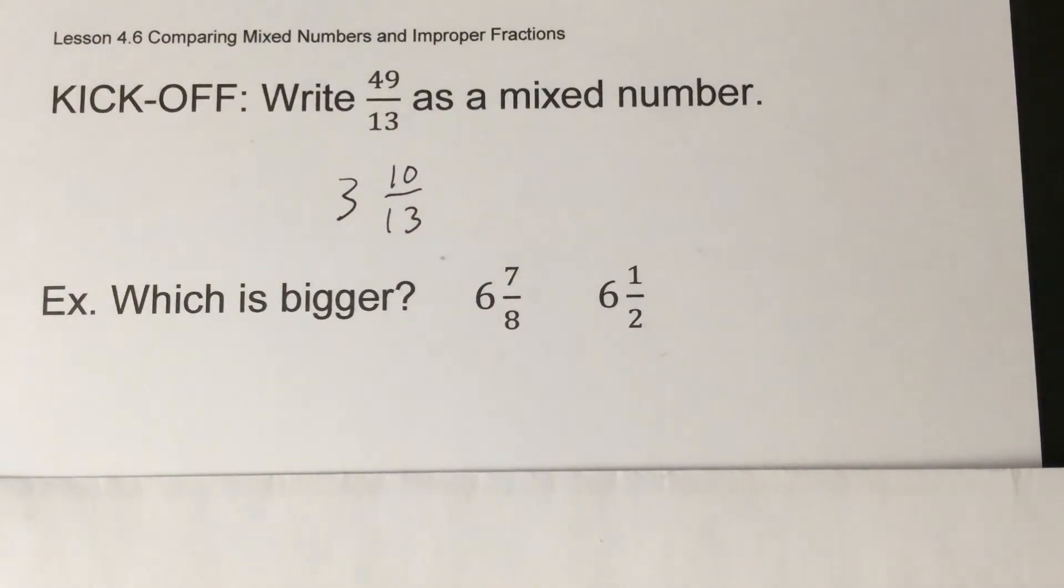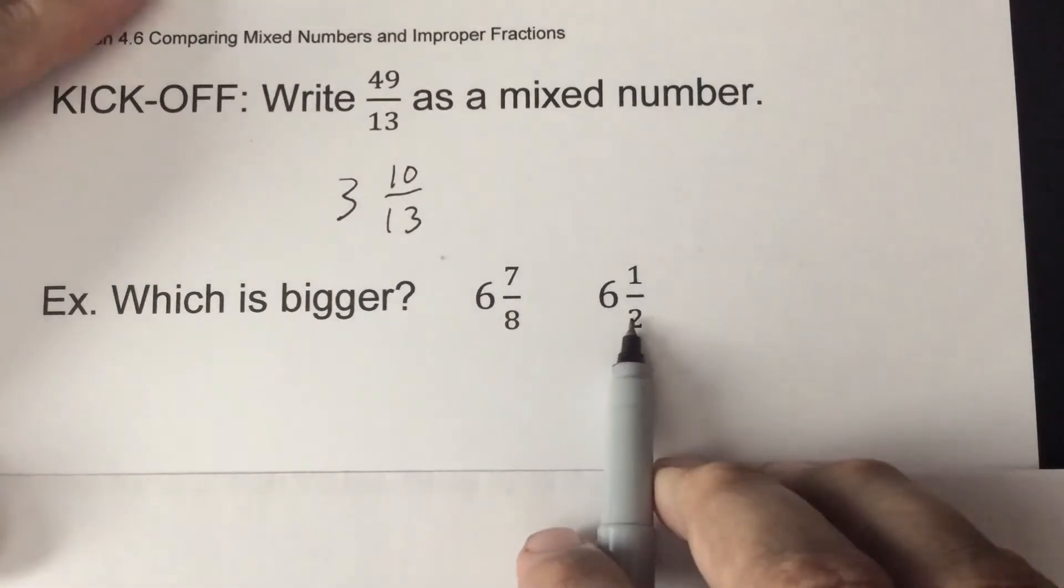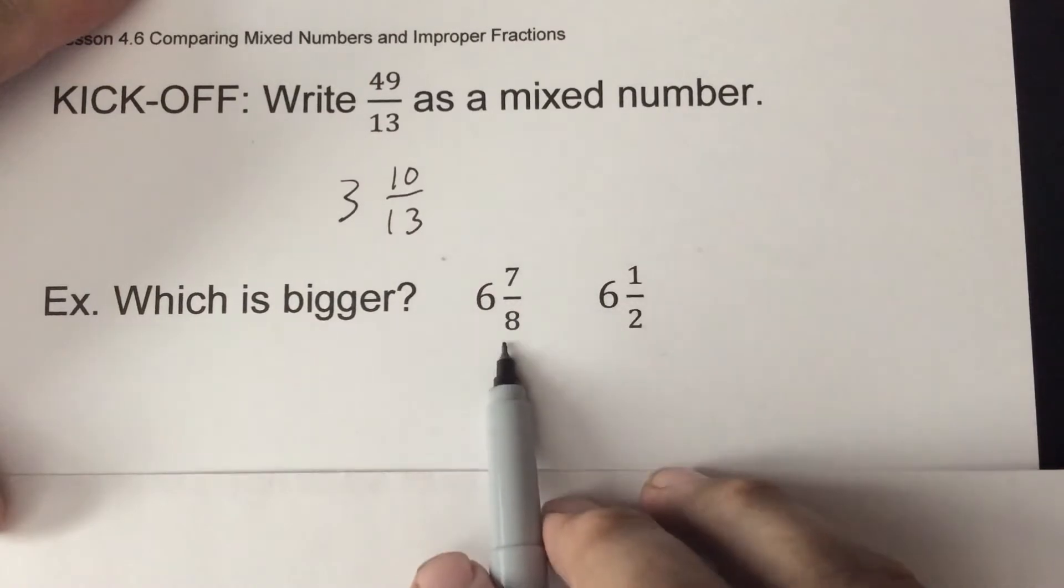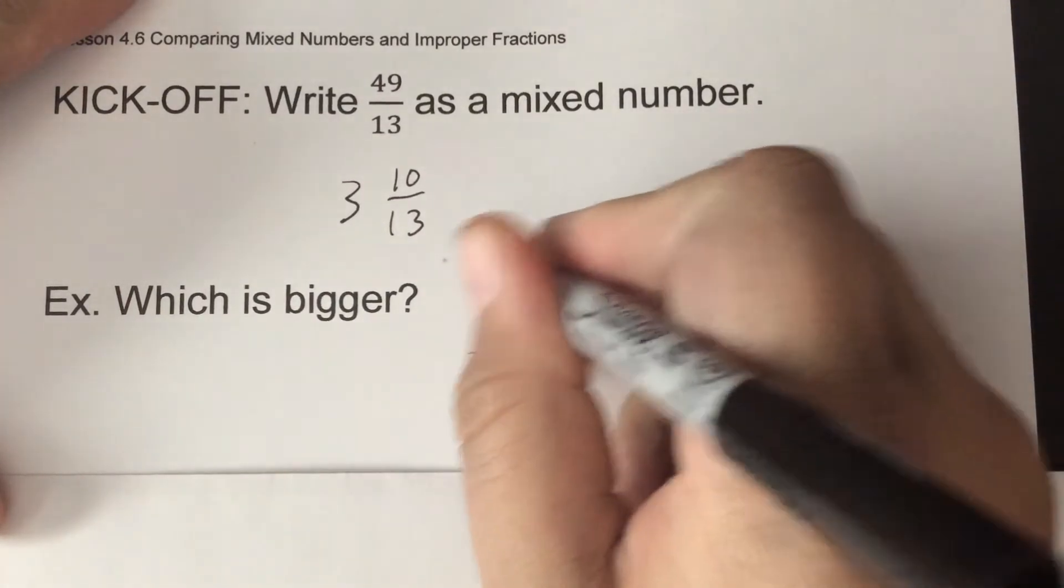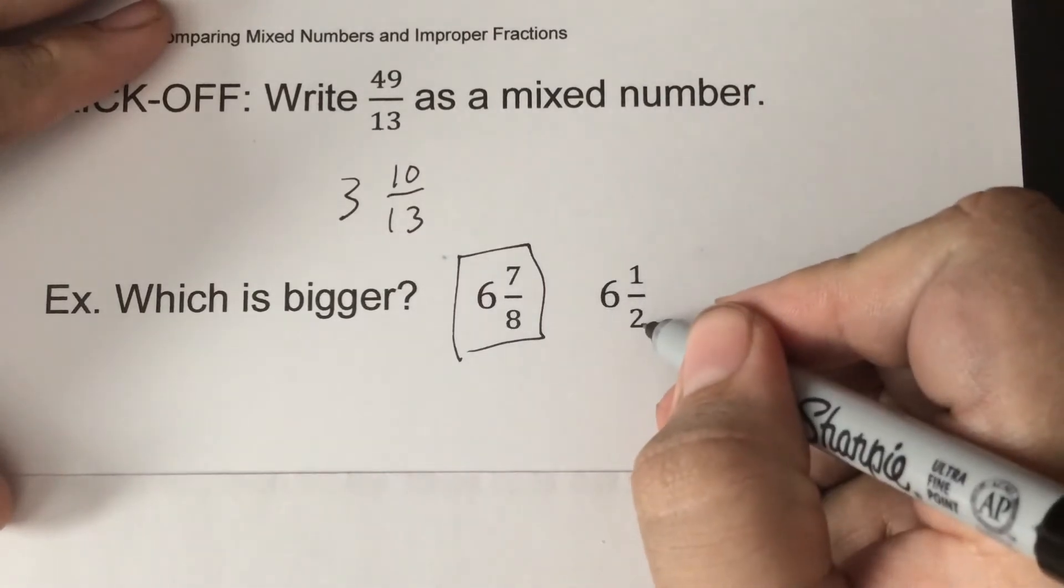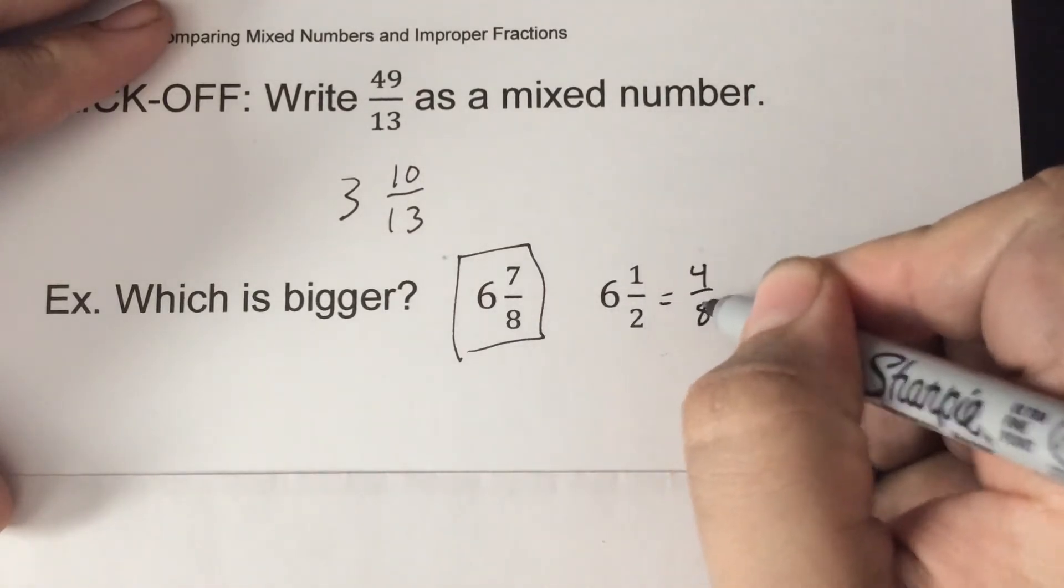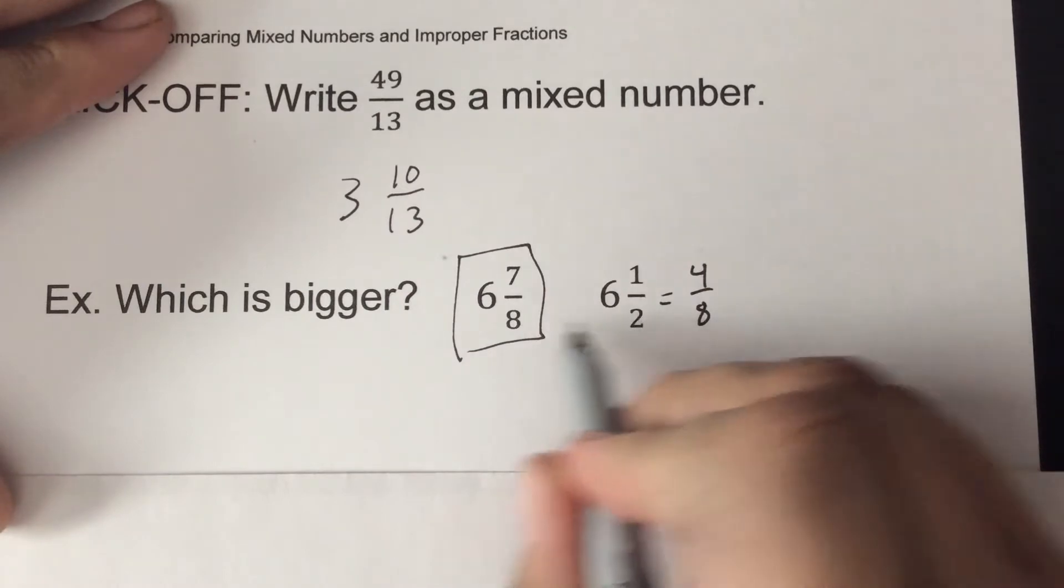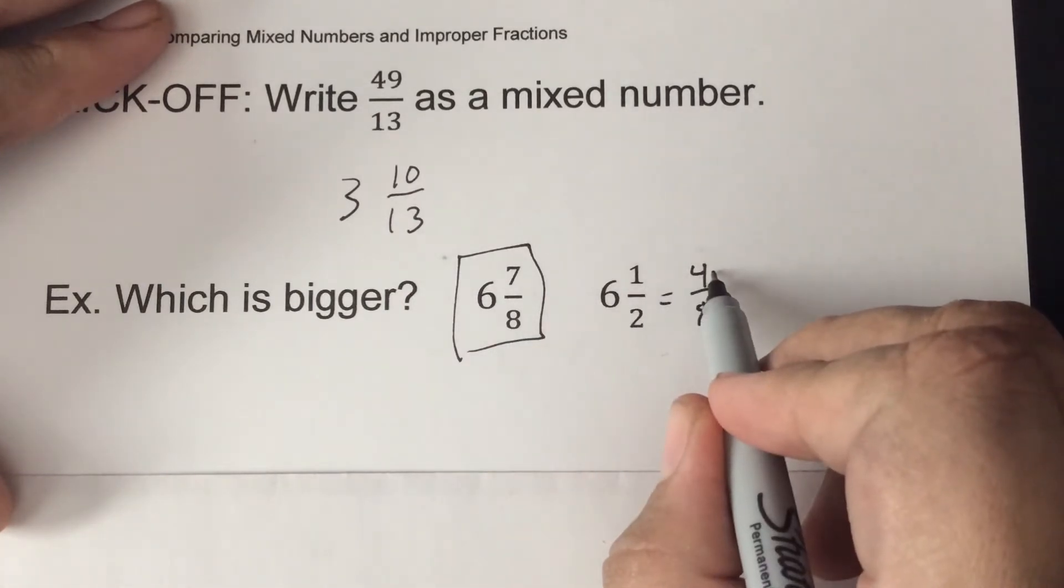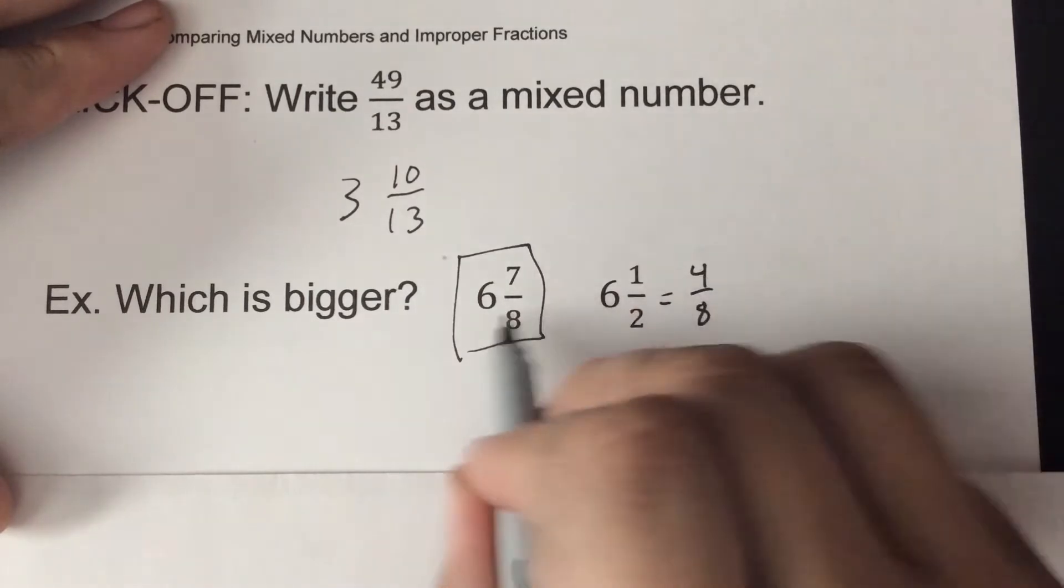We're going to be comparing these. Like here, 6 and 7/8, 6 and 1/2. Which one's bigger? Well, 1/2 is halfway through. 7/8, we're almost all the way through. So 7/8 is going to be the bigger one. Remember, we could get common denominators here and this would be 4/8, because 2 times 4 equals 8. So 1 times 4 would be 4. So 7/8, 4/8, 7/8 is bigger.